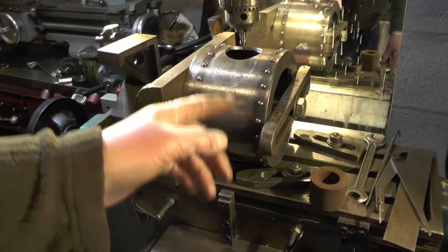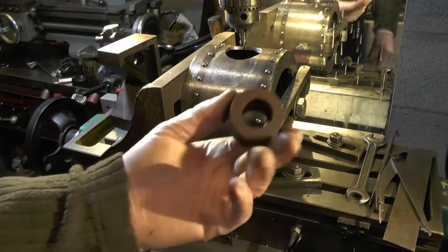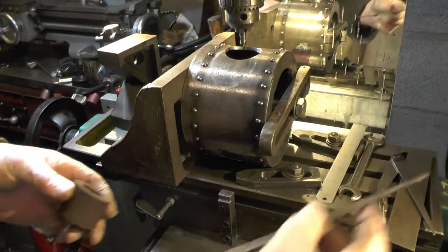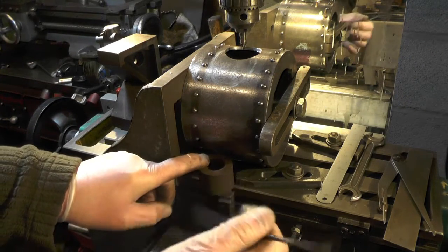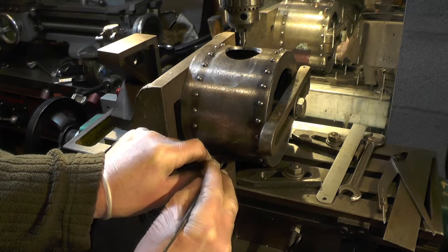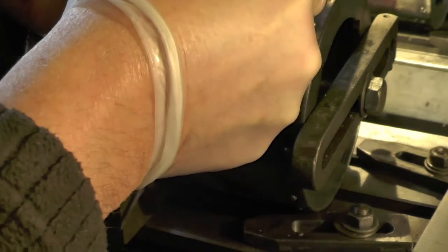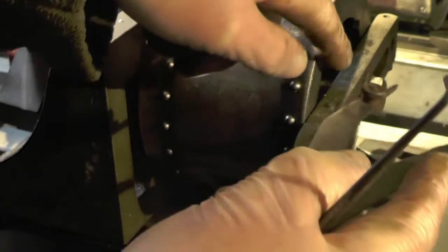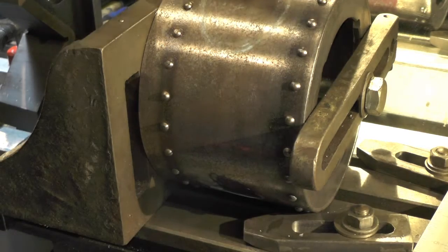So I've got a block inch and five sixteenths high, put some marking blue on, and all I've done is scribe a line off this block. And then I've got my calipers set to the distance to the center from this face and just scribed a line up. And then I've done the same on the other side.